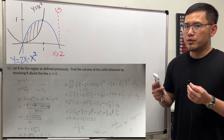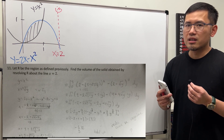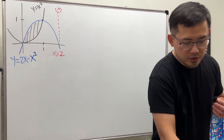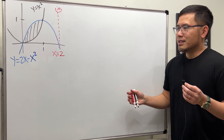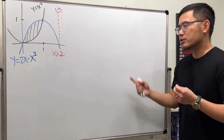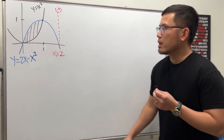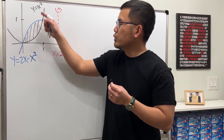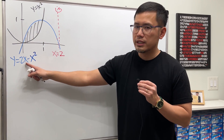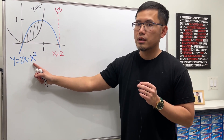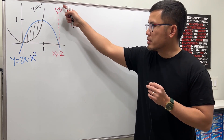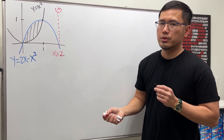In fact, it's easier to use the shell method, so in this video I want to show you both. This will also be useful for people learning volumes of revolution. We have the curve y = x² and the curve y = 2x - x², and we'll rotate this region about the vertical line x = 2.